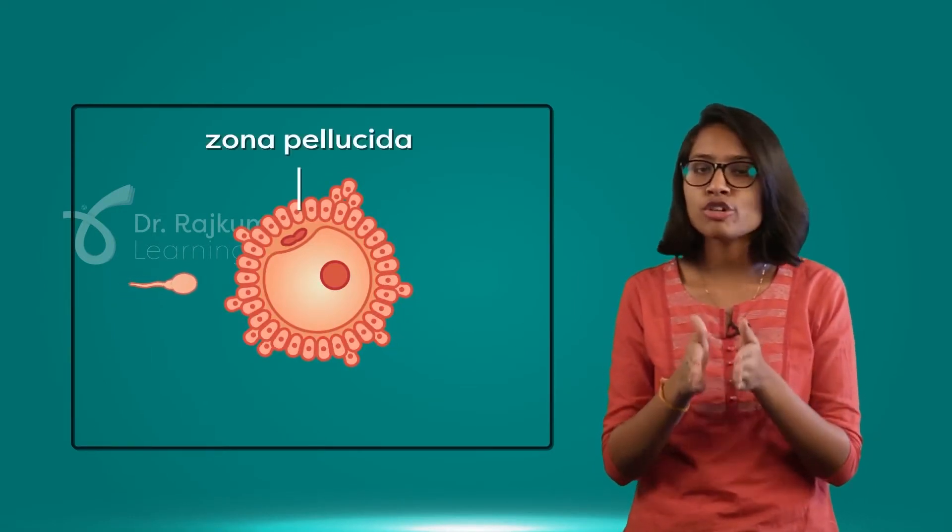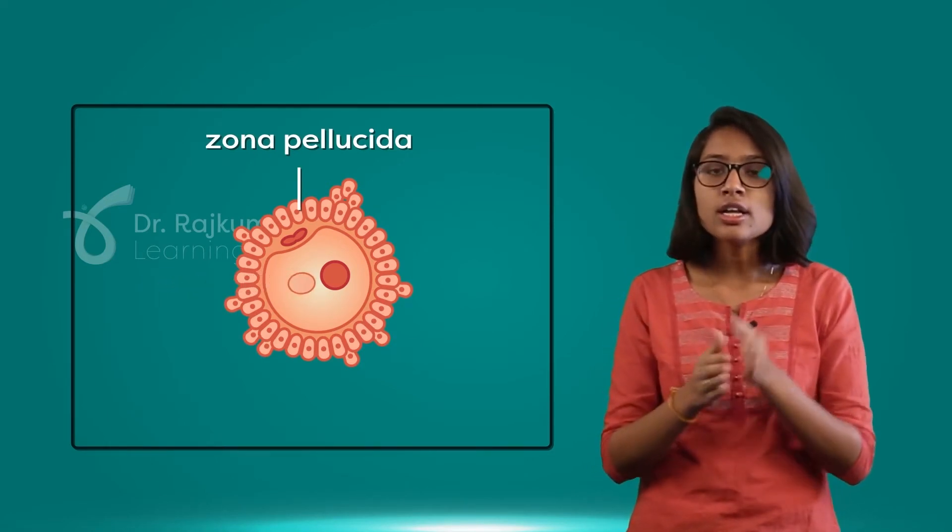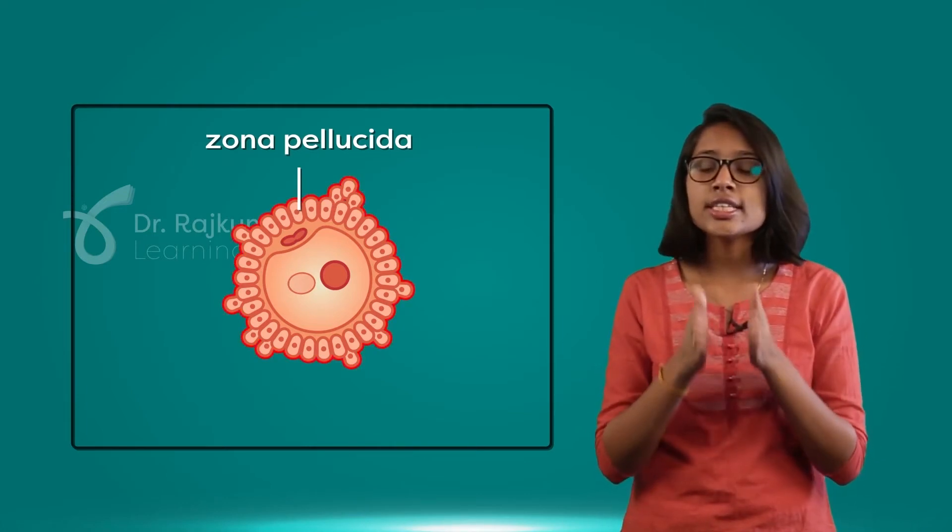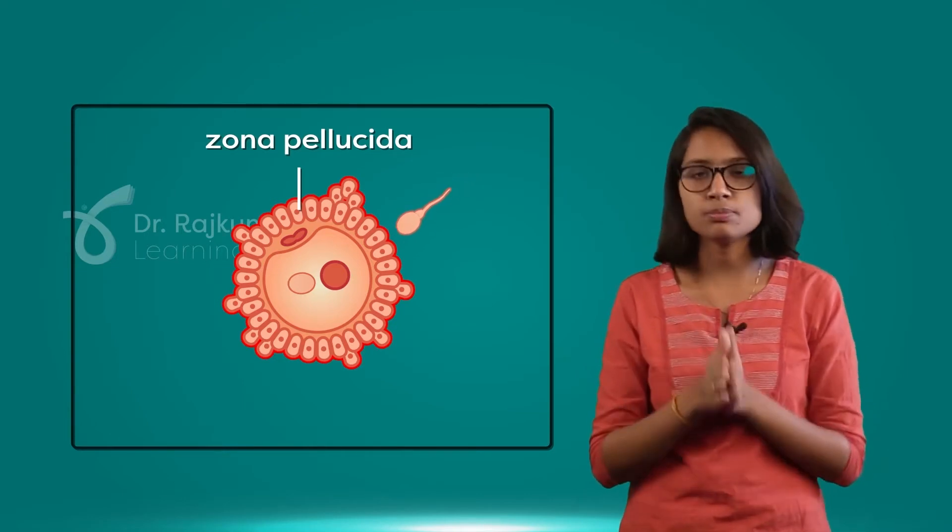When the sperm comes in contact with the zona pellucida, the ovum will induce some changes in its structure. This leads to the blocking of additional entry of other sperms. See how organized these cells are.